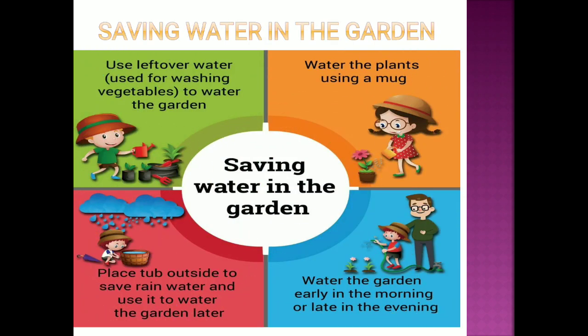Saving water in the garden: use leftover water from washing vegetables in the garden. Water plants using a mug — don't use a pipe. Place a tub outside to collect rainwater and use it to water the garden later after the rain has stopped.